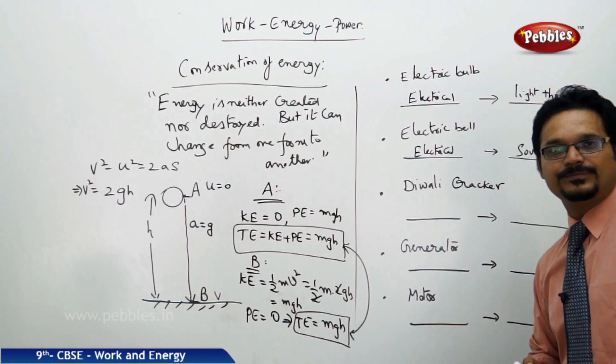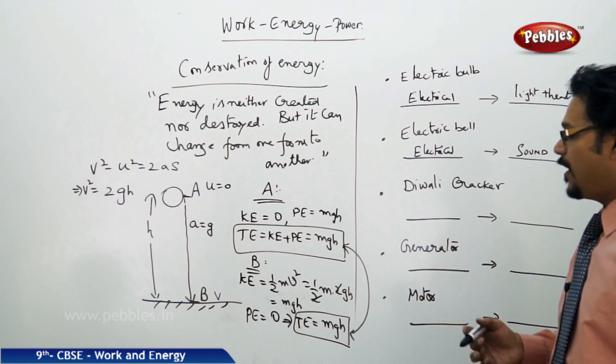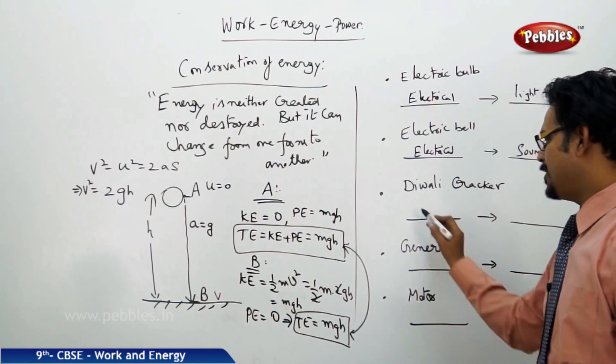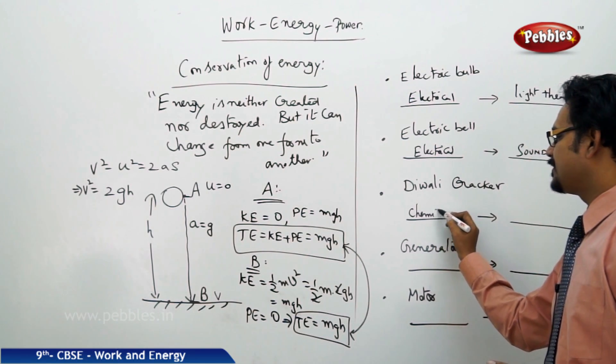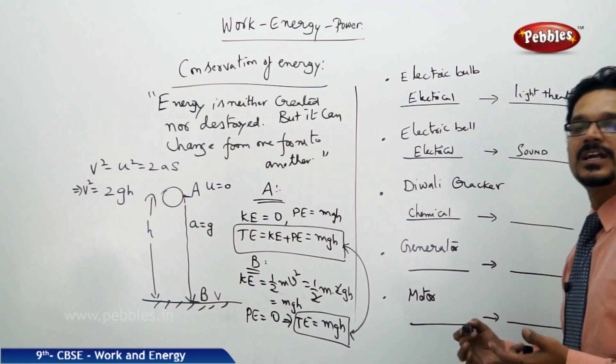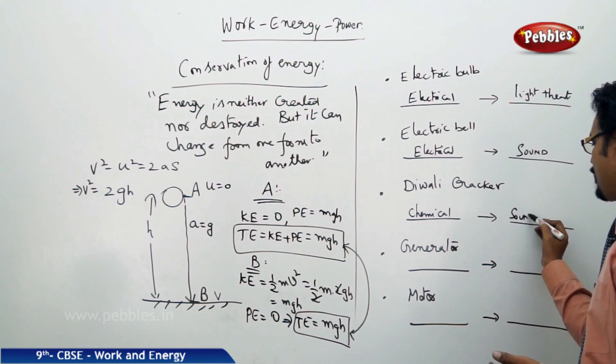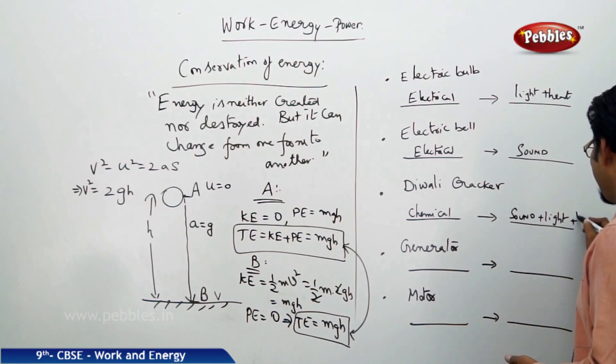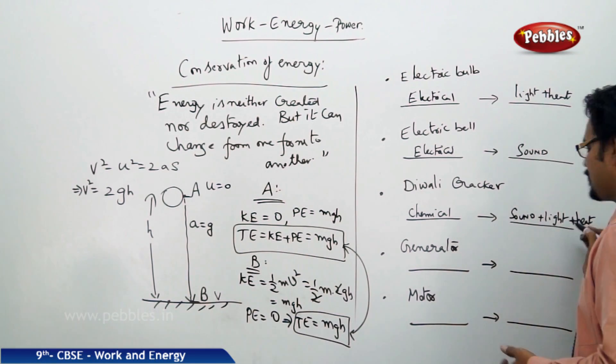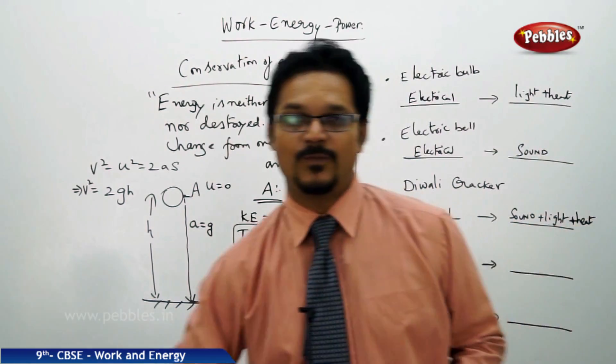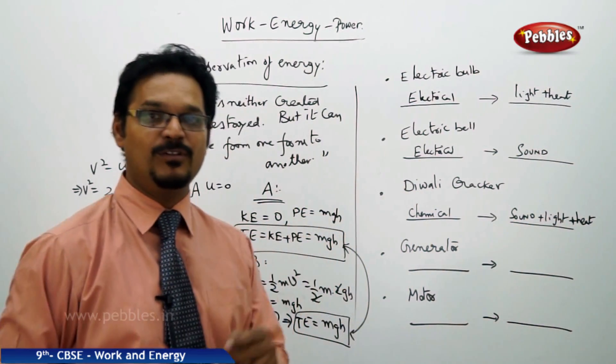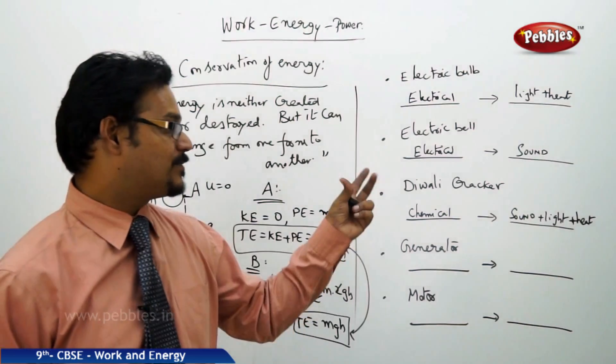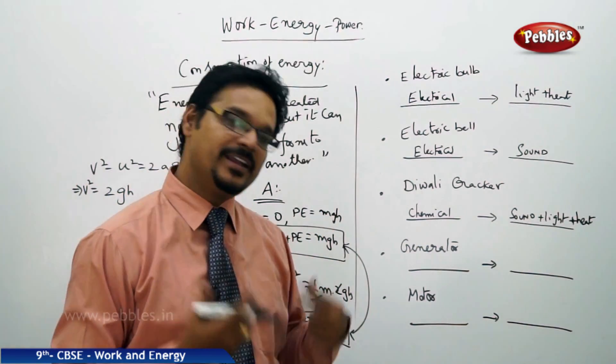Diwali cracker: how are crackers made? Crackers are made by chemical energies. So here chemical energy converts to sound—yes, you hear the sound—light—yes, you can see the light also—plus heat. They are hot once the bomb is blasted. If you touch the bomb you feel hot, and when the bomb blasts you can see some sparkles of light and you hear sound also.